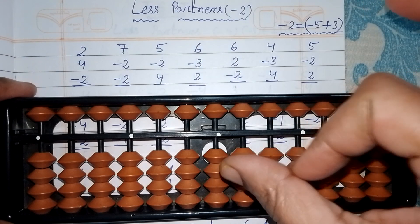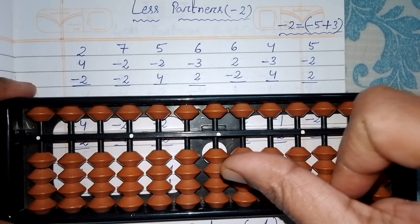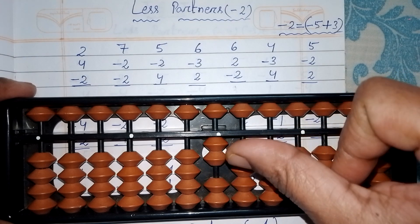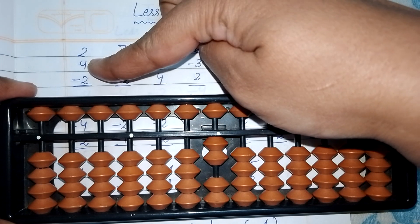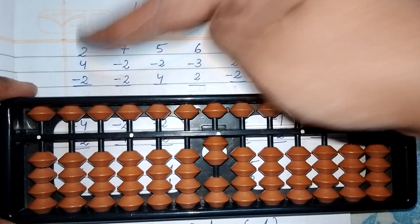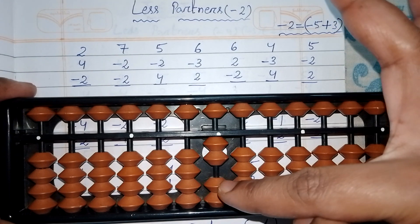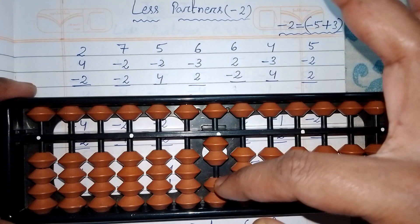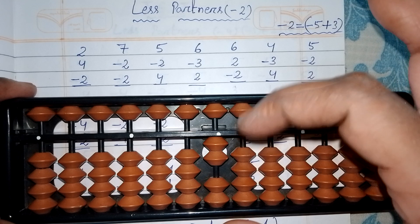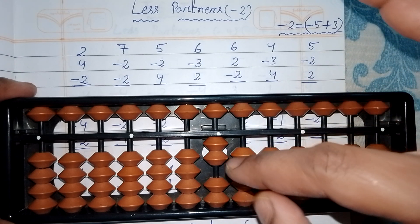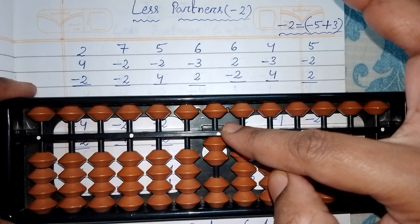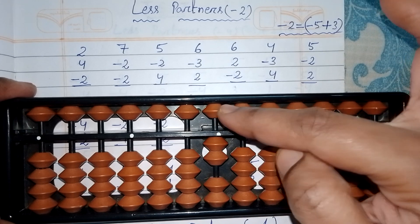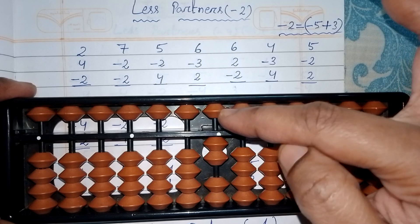First question: 2+4-2. I'll explain step by step. While adding two, use the thumb finger and push up two on the units rod — that's two. Next, four: look here, we only have two bits and we need four bits, so we can't add four directly.